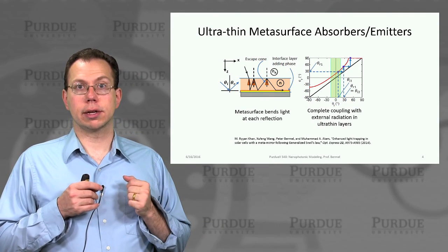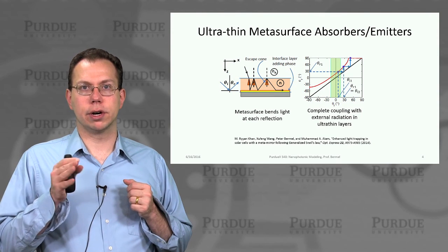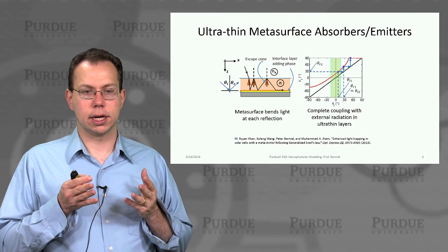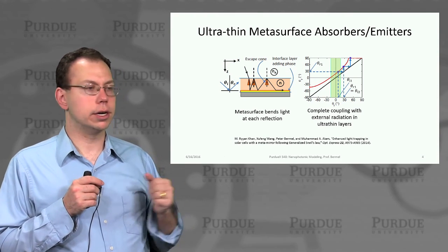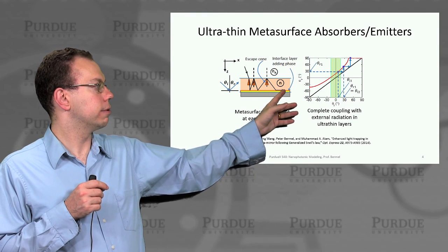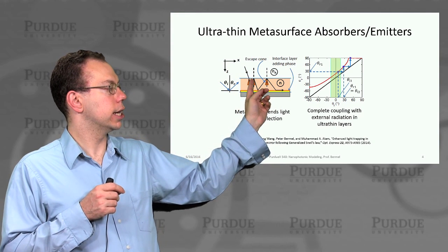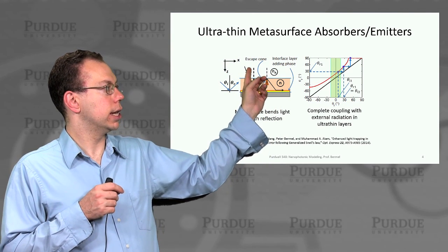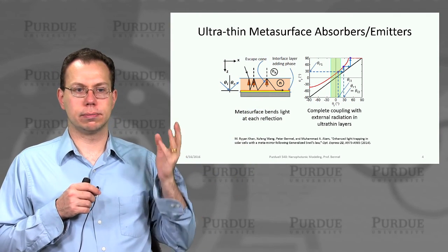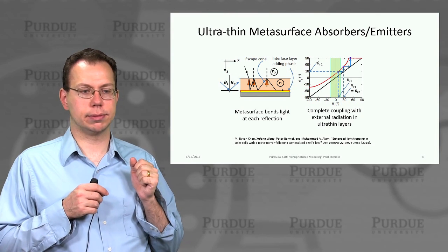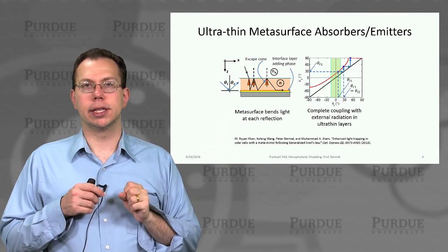So here, the application we'll consider is how you can redirect light for light trapping in photovoltaic absorbers or other types of photodetectors. The concept would be that you'd have a metasurface in the back of a semiconductor. When light comes in, of course, it comes in either at normal or near normal incidence, gets refracted towards the normal because it's coming from a low index medium to a high index medium. But then